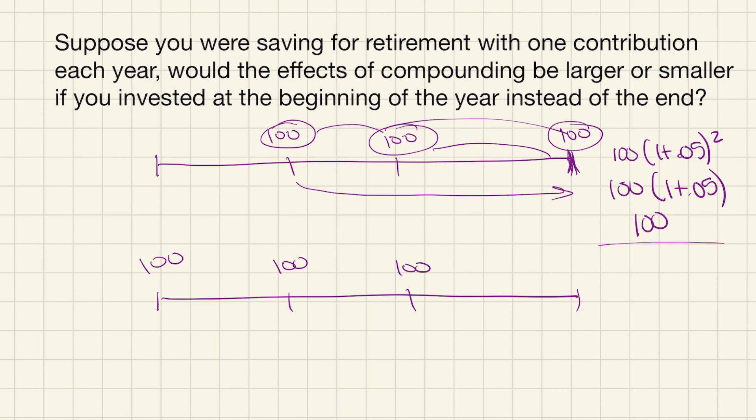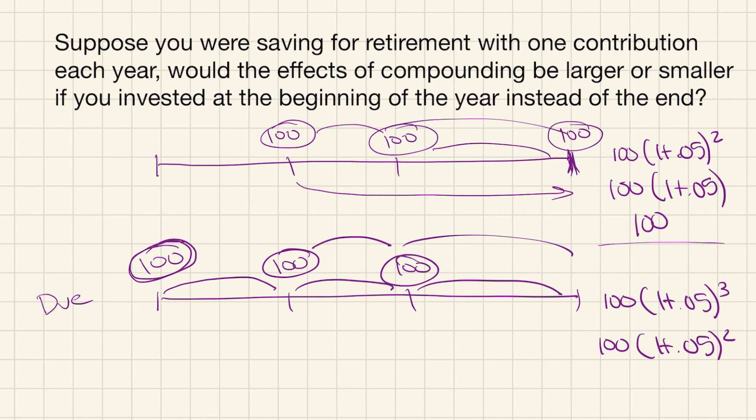Now if I look at my lower timeline, what's actually happening here when we have the due version is this first cash flow is being compounded one, two, three times, then the next cash flow is being compounded two times. Then the last cash flow is compounded one time.